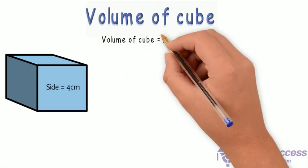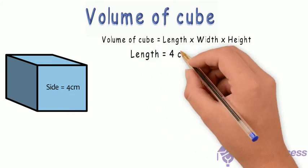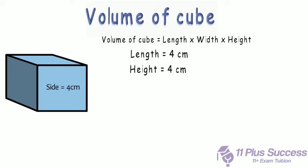Volume of Cube: Length, Width, Height. Let's put the values in the formula. As all sides are equal, the measurements are as follows: Length equals 4cm, Height equals 4cm.